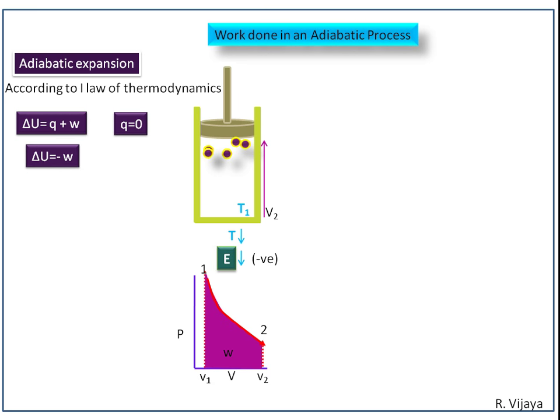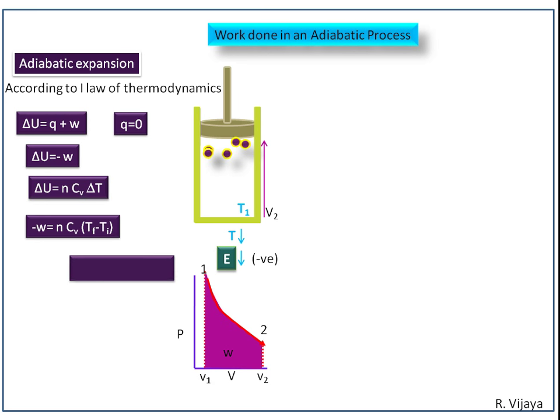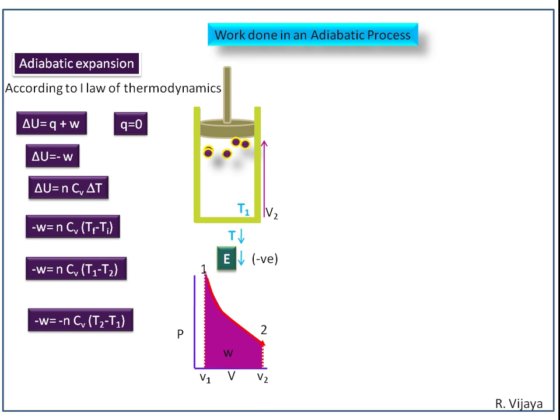delta U becomes minus W. We know that delta U is equal to N Cv delta T, where delta U is the change in internal energy, N is the number of molecules, Cv is the molar heat capacity at constant volume, and delta T is the change in temperature, that is final temperature minus initial temperature. Substituting the final and initial temperatures, we get minus W equals N Cv into T1 minus T2. Rearranging this equation, we get minus W equals minus N Cv into T2 minus T1. This is the work done in an adiabatic expansion.